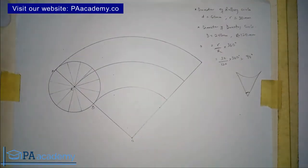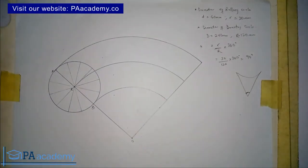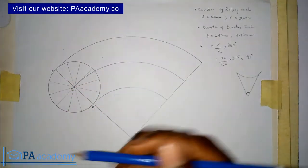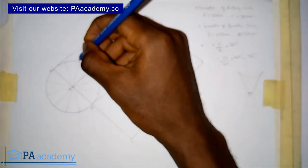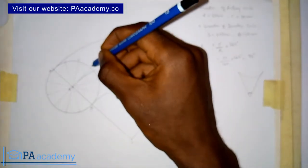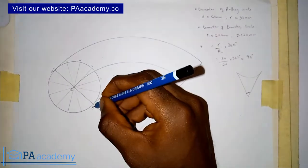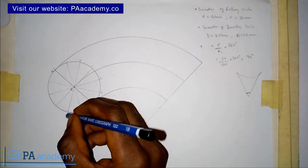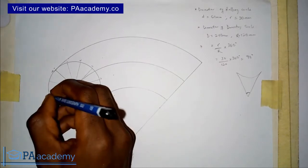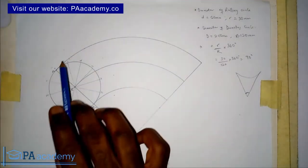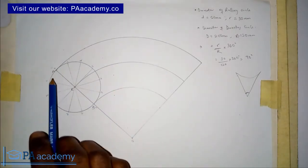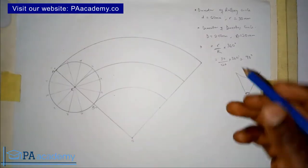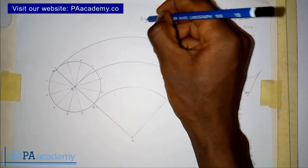After dividing the circle into 12 equal parts, number the points in this order: 0, 1, 2, 3, 4, 5, 6, 7, 8, 9, 10, 11, and 12 — following the clockwise direction starting from the bottom point. If you start from any other point you may get wrong results. Remember, what we are doing here is a hypocycloid.